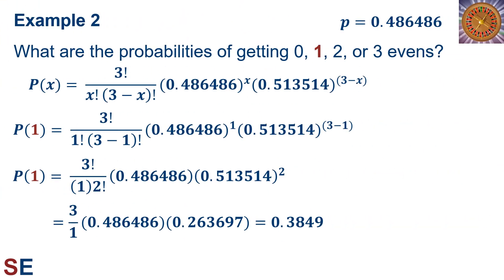Now for the probability of seeing 1 even. The probability is 3 factorial divided by 1 factorial times 3 minus 1 factorial, all multiplied by 0.486486 to the first power times 0.513514 to the 3 minus 1 power. The factorial part simplifies to 3. The 0.486486 to the first power is 0.486486, and 0.513514 is squared (3 minus 1 equals 2). Multiplying all of this out gives us 0.3849.